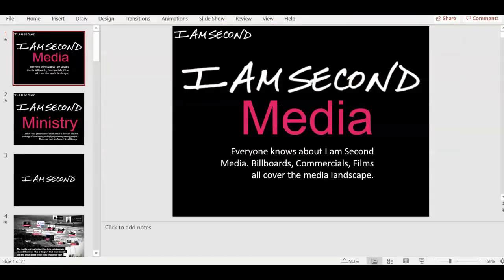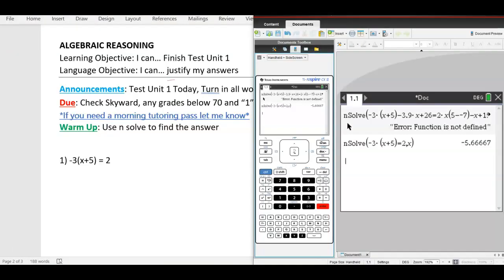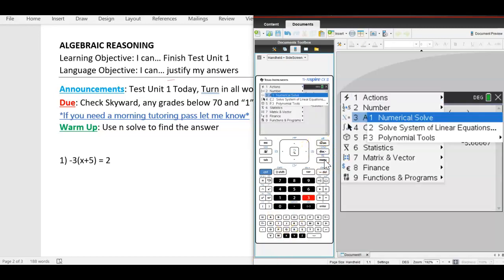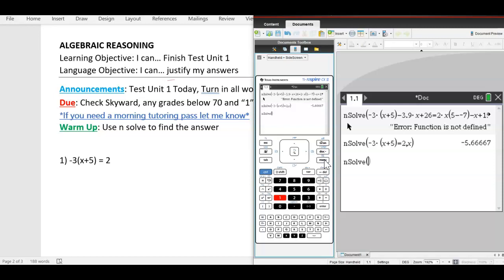So I'm going to show you how to type it in. It's going to be this. Okay, so if you type menu three one, type in the equation, negative three x plus five equals two, comma x. You cannot forget comma x. It's going to spit out the answer for you.